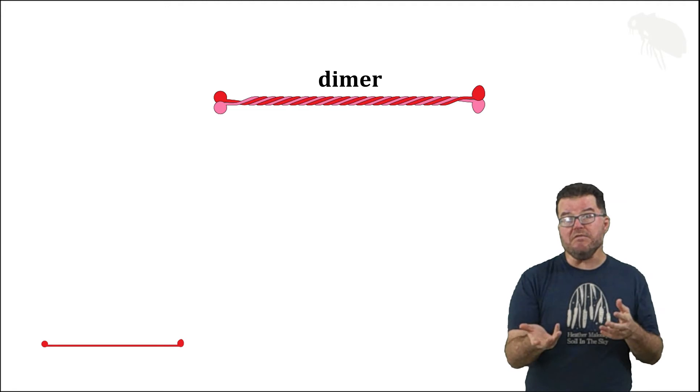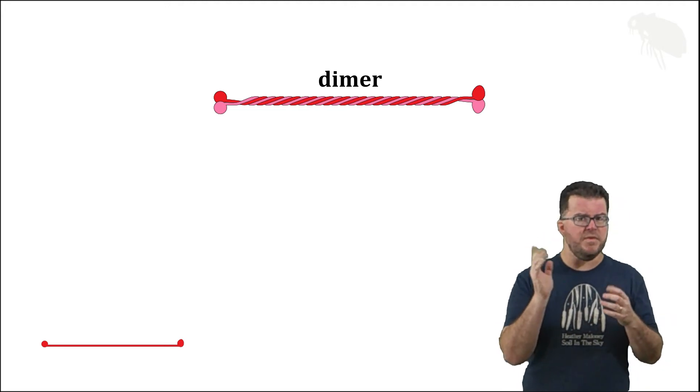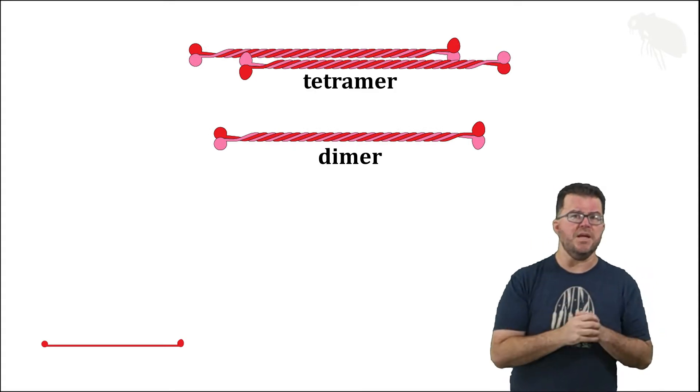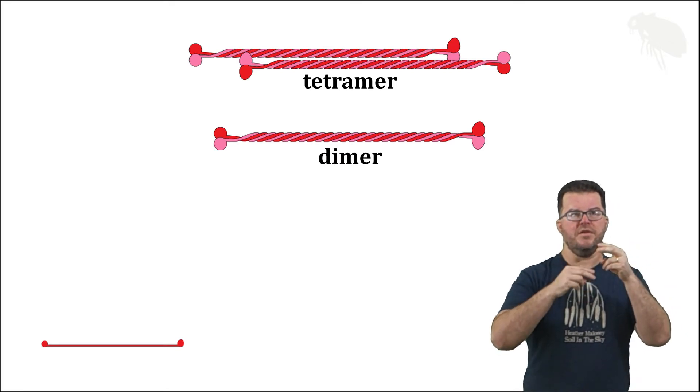Dimeric keratin fibers are used to build intermediate filaments, but not by themselves. In fact, dimeric filaments are often combined into pairs of dimeric filaments called tetramers. And so now you can see up top a tetramer—two sets of monomers or two dimers combined into a tetramer.